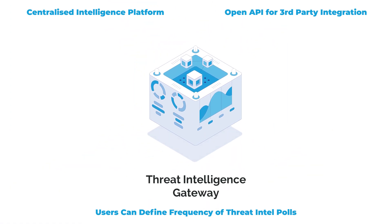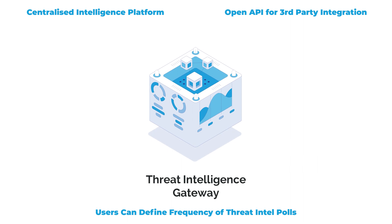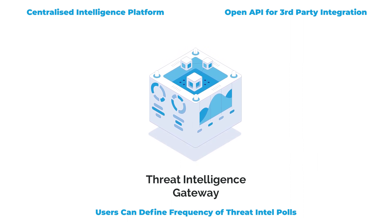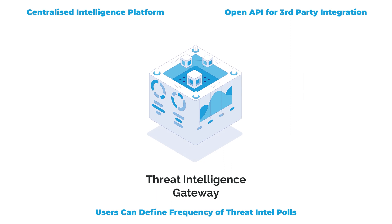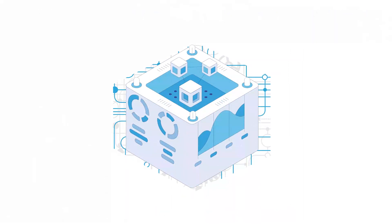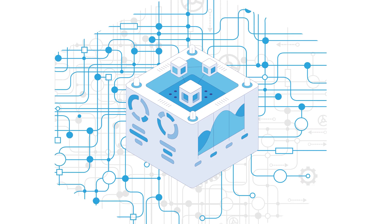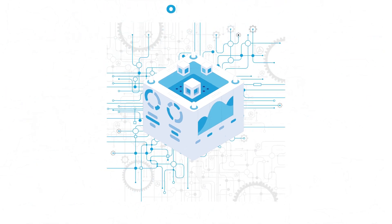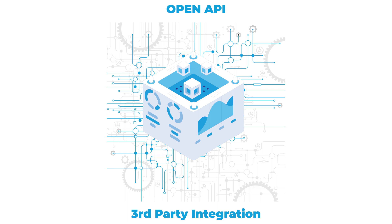The intelligence gateway is a centralized intelligence platform. Incorporated with MISP, the platform distributes threat intelligence across the TDAC system. Users can define how frequently intelligence is polled by TDAC, ensuring that the threat detection capabilities are operating on the latest intelligence. Including an open API, the intelligence gateway allows for third-party integration, enabling end users to incorporate their own intelligence feeds.